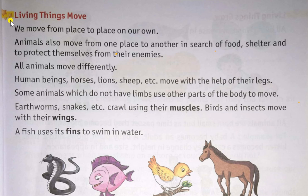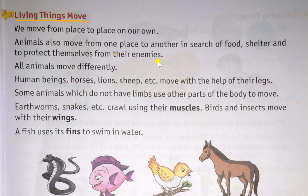Now we are going to discuss the features. The second feature is: living things move. We move from place to place on our own. Animals also move from one place to another in search of food, shelter, and to protect themselves from their enemies. Human beings, horses, lions, and sheep move with the help of their legs.